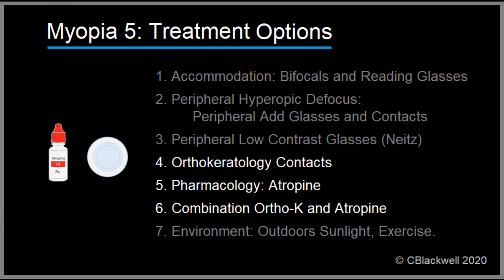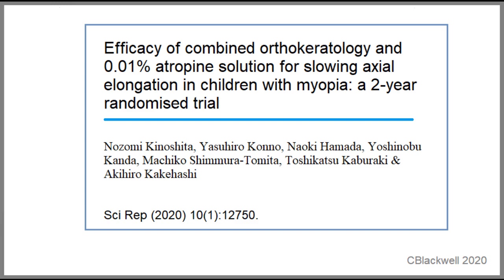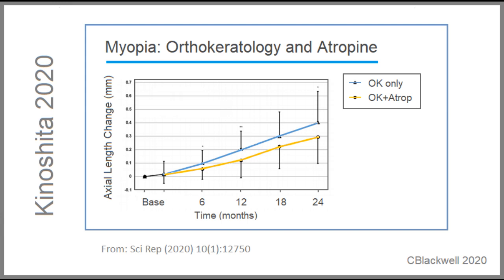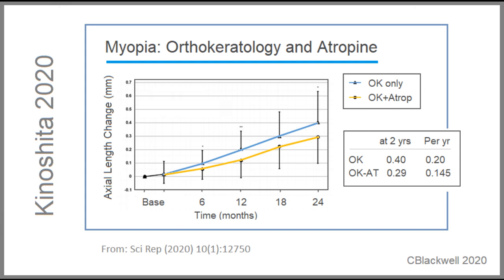Since ortho-K works and atropine works, what is the effect of combining the two? A recently published study compared one group using ortho-K only versus a group with ortho-K plus atropine. Over the two years of the trial, as measured by axial length, the combination group did better than the ortho-K only group. They found a possible difference in response depending on the level of myopia, but this demonstrates the combination option.